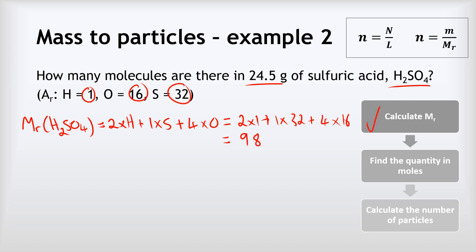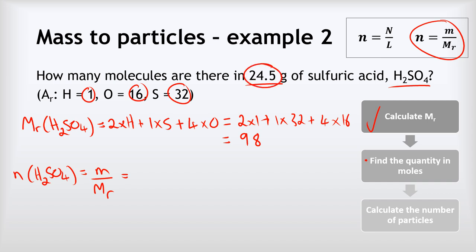The second step is to find the quantity in moles using N equals M over MR. So the number of moles of H₂SO₄ equals mass M over relative formula mass MR. The mass in the question is 24.5 grams divided by the MR of 98, giving an answer of 0.25 moles of sulfuric acid. That is the second step done.